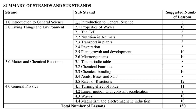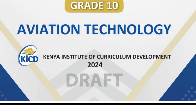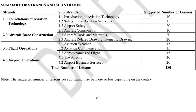Next is aviation technology. The first strand is foundation of aviation technology, with substrands: introduction to aviation technology, safety in the aviation workplace, and airport safety. The second strand is aircraft basic construction, covering substrands such as aircraft components, aircraft tools and materials, and aircraft-related drawing — specifically isometric drawing.